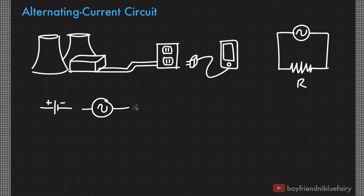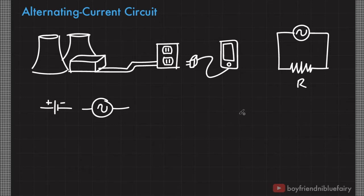In an alternating current circuit, the charge flow reverses direction periodically. So in an AC circuit, the device with resistance R receives a voltage that is fluctuating over time. Even if the voltage keeps on changing, we can still register a maximum voltage, and we call this the peak voltage, symbolized by V sub P.